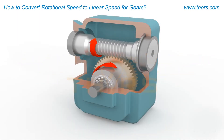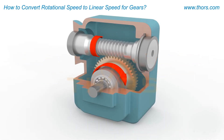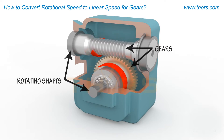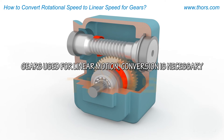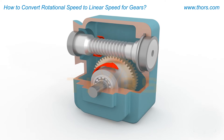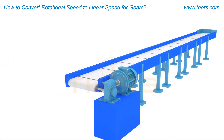Gear speed is measured as rotational speed due to the fact that gears are attached to rotating shafts. When gears are used to produce linear motion, conversion is necessary to determine the linear velocity of the system. One common example of a linear motion application is a conveyor drive system, where a belt is mounted on a rotating drum.